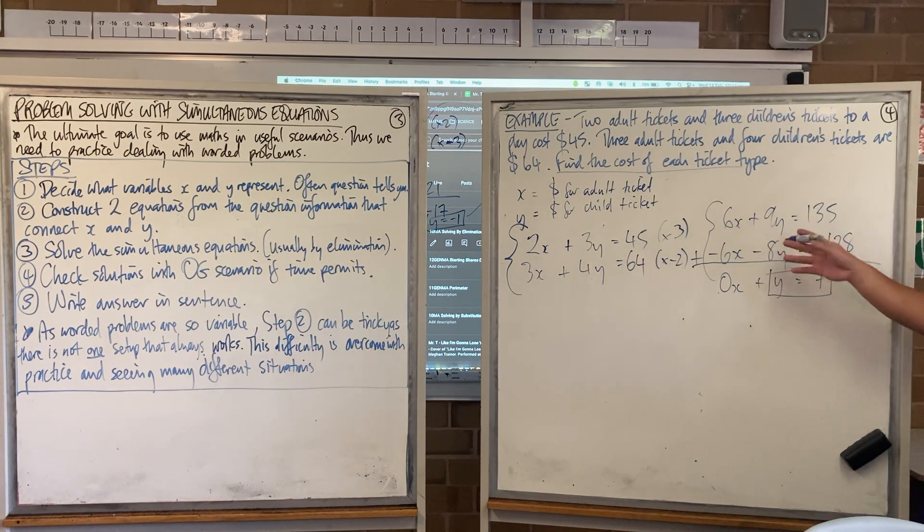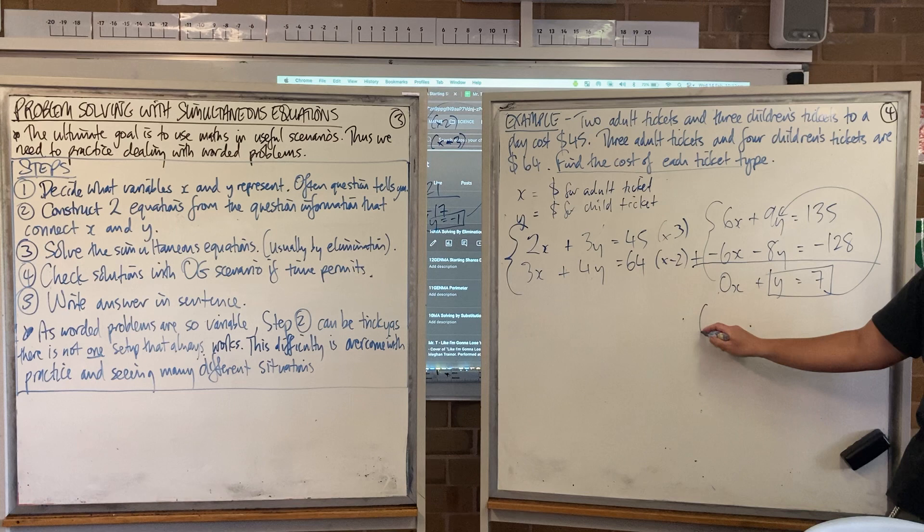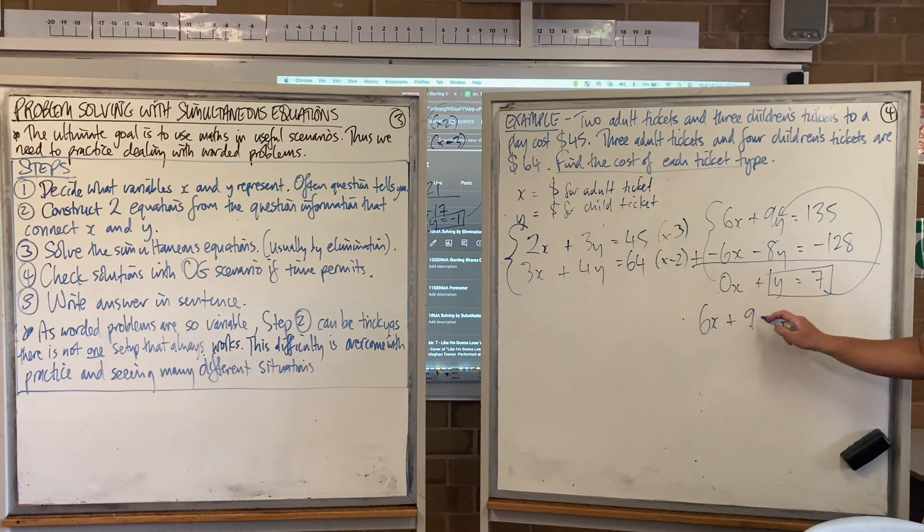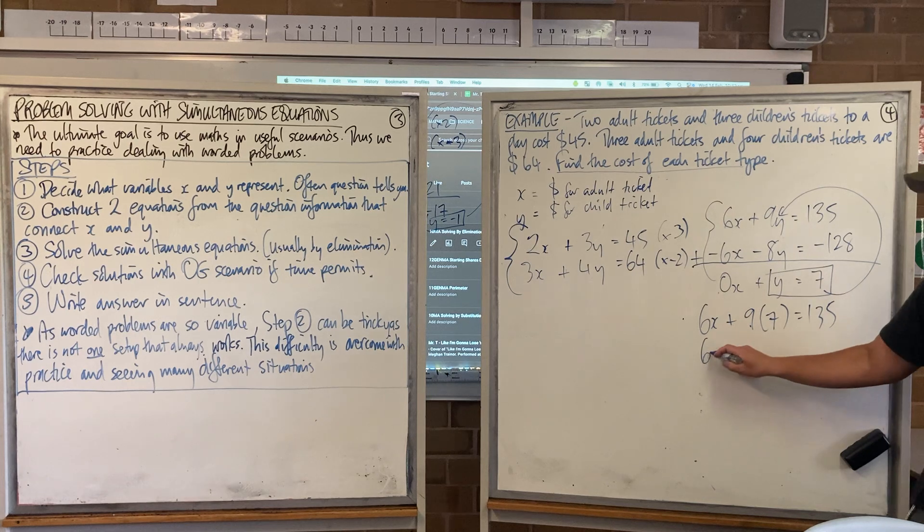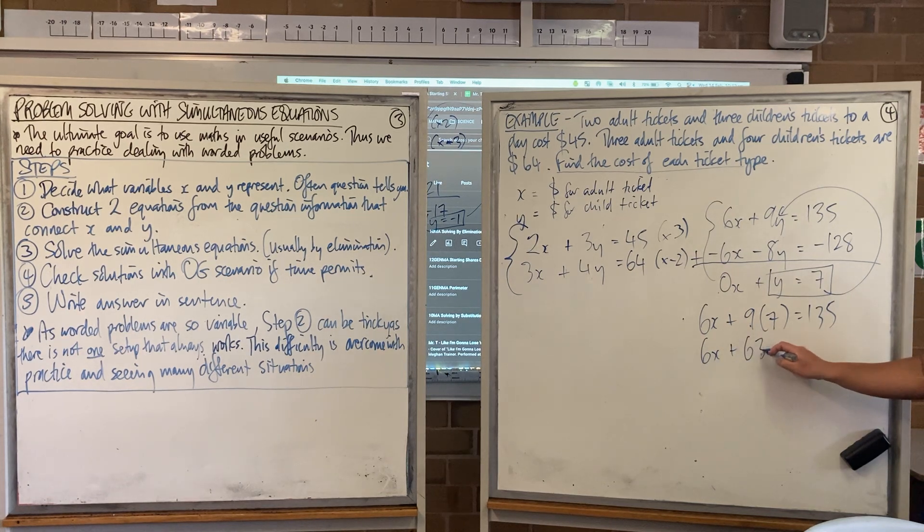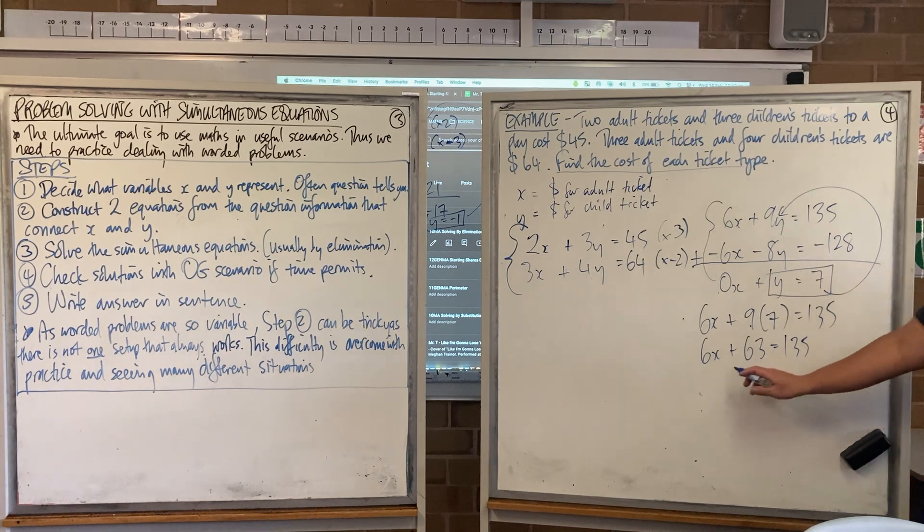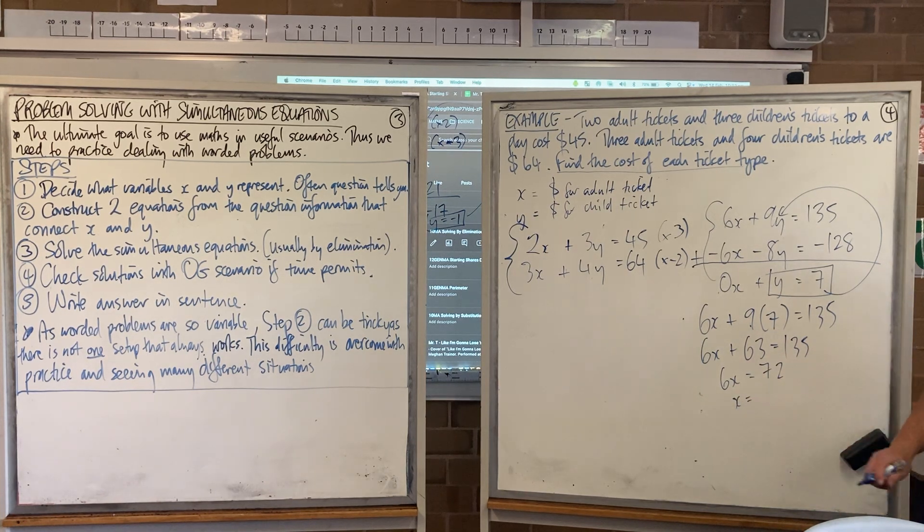Which one would it look easier to substitute that into? The top. So 6x plus 9 times by 7 equals 135. 6x plus 63 equals 135. 135 minus 63 is 72. And then 72 divided by 6 is 12. X equals 12.